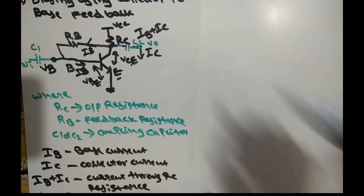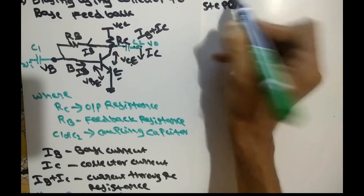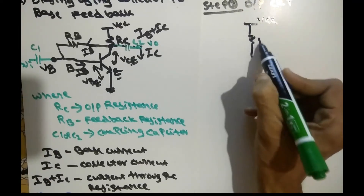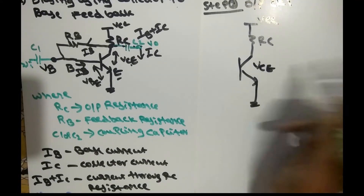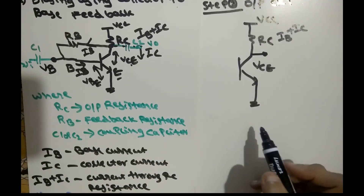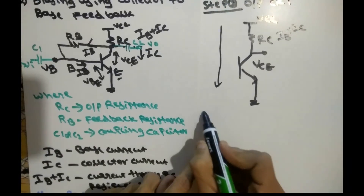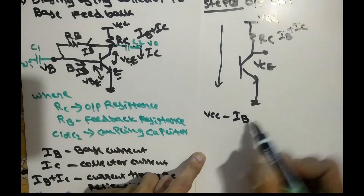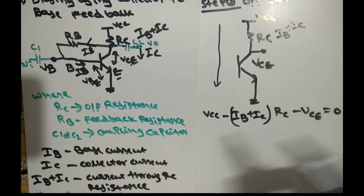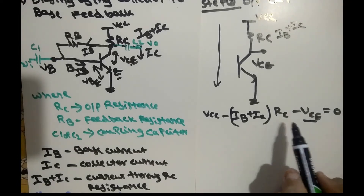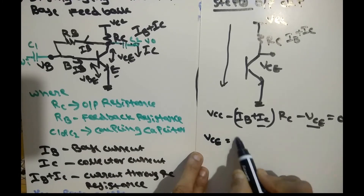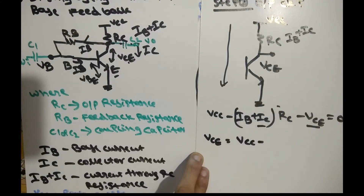Moving to step 2, our aim is to find the output circuit using KVL. Drawing the output circuit: VCC, then RC, then the transistor, with VCE across the transistor. The current through RC is IB plus IC. Applying KVL: VCC minus (IB plus IC) into RC minus VCE equals zero. From this we can find VCE, which gives VCE equals VCC minus IB into (1 plus beta) into RC. This is Equation 2.